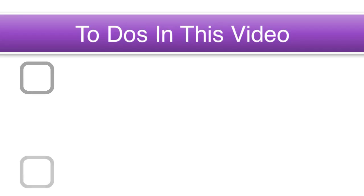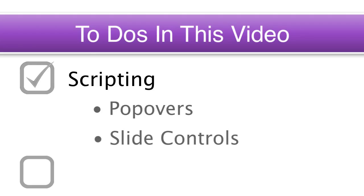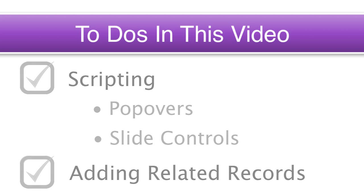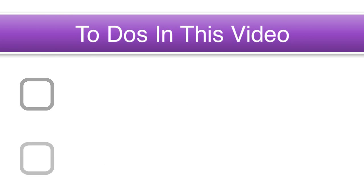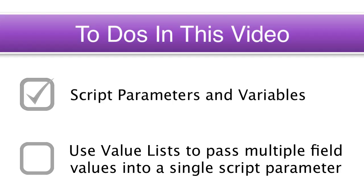So what are we going to do in this video? This video is all about scripting — scripting popovers, scripting slide controls within popovers, and adding related records to your database. We're also going to cover script parameters and variables, and discuss using value lists to pass multiple field values into a single script parameter — something that's not necessarily obvious to most beginning and intermediate FileMaker users.